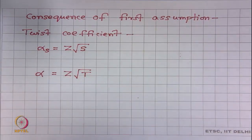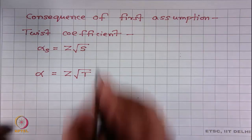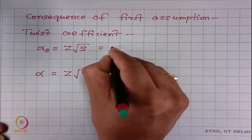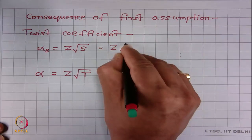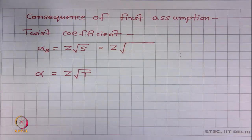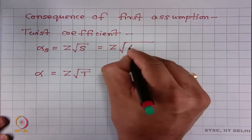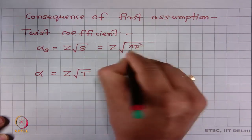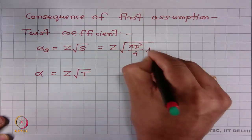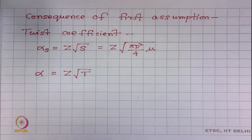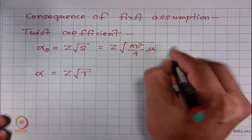First, let us start with twist coefficient. As we know, alpha_s = z * sqrt(s) and alpha = z / sqrt(t). These two relationships were learnt in module 2. Now, S is the substance cross-sectional area of yarn, which equals (pi * d^2 / 4) * mu. This relation was also learnt in module 2.